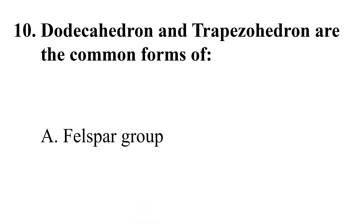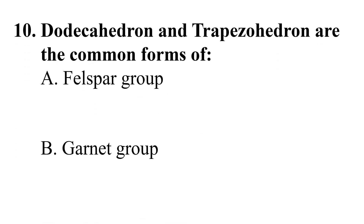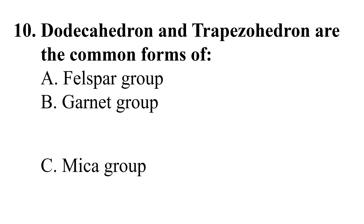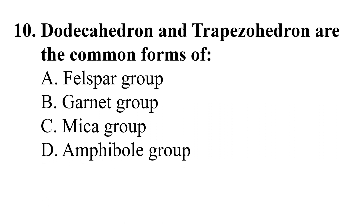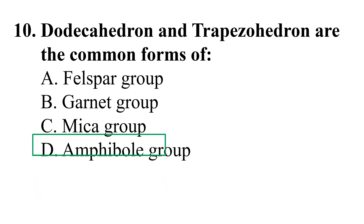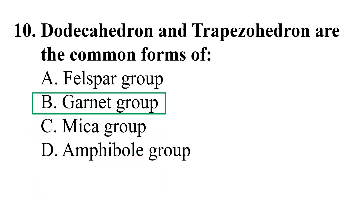Question 10: Dodecahedron and trapezohedron are the common forms of: A) Feldspar group, B) Garnet group, C) Mica group, D) Amphibole group. The correct answer is B) Garnet group.